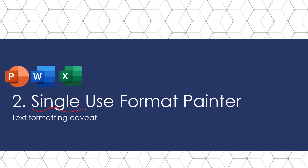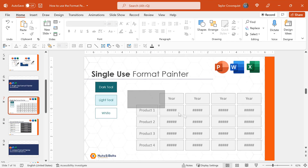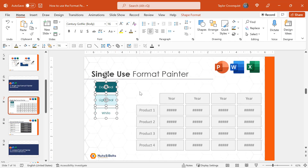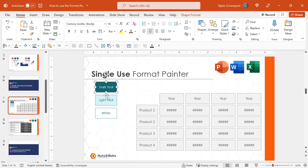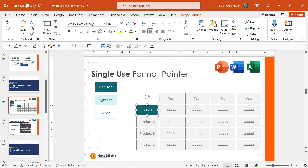Let's first look at how to use the Single Use Format Painter and talk about the text formatting caveat. Here in PowerPoint, I have a grayed out graphic, but I have all of the formatting I want to use here on the left. To start using the Single Use Format Painter, I'll simply select the object — which copies all of the object and text formatting — come to the Home tab, click the paintbrush icon, my cursor becomes a paintbrush, and I click the object I want to apply that formatting to.